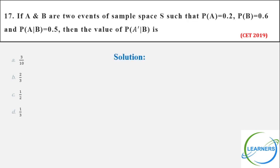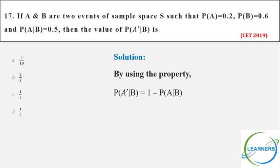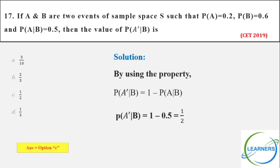Remember property 3? That is P(A'|B) = 1 − P(A|B). They are given P(A) and P(B) just to confuse you. What you need is only this. Substitute: P(A|B) is given as 0.5, so the answer is 1 − 0.5 = 0.5, that is 1/2. Option C.